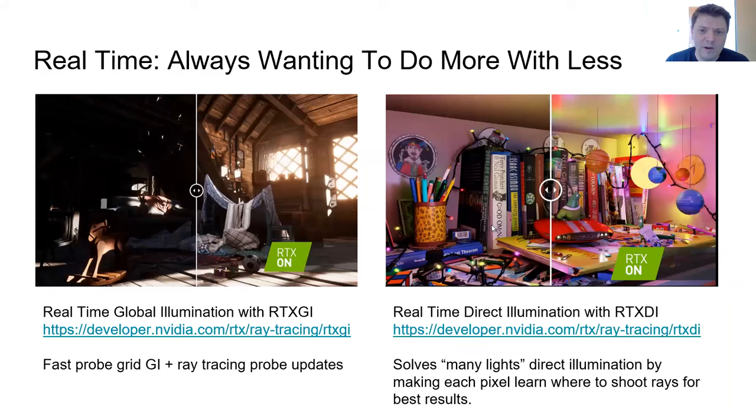So in real time rendering, we're always wanting to do more with less. And so some great examples of that from modern times is on the left, we have RTXGI. And what that is, is if you squint, it's global illumination from a traditional probe based GI system, but using ray tracing to update those probes to have runtime dynamic GI.